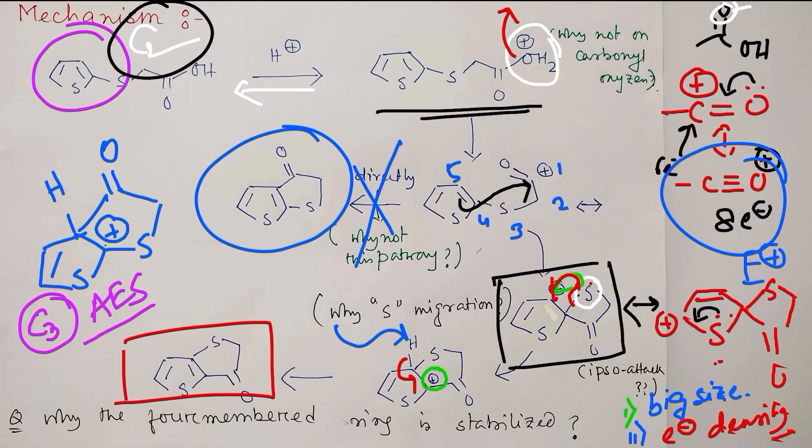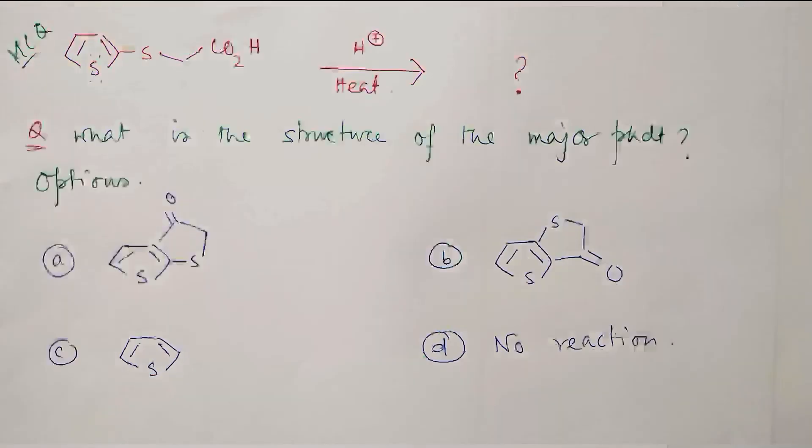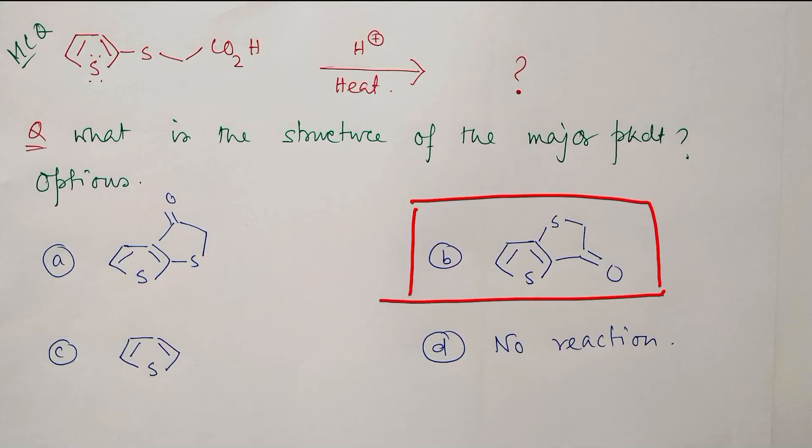So in this way this product will be produced. So the answer of this question is this one. I know you may be little confused why sulfur goes there - originally sulfur was attached to C2, but because of migration this is so.